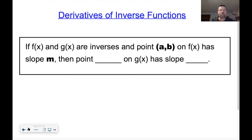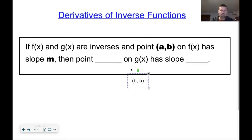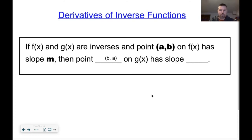For the calculus part: if f and g are inverses and the point (a, b) on f has a slope of m, then the related point (b, a) is on g, and the slope at that point on the inverse function is the reciprocal — 1 over m.